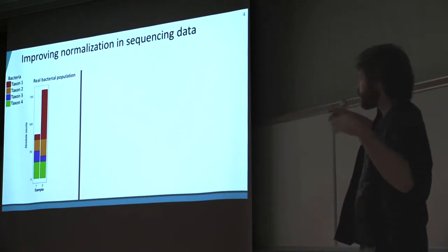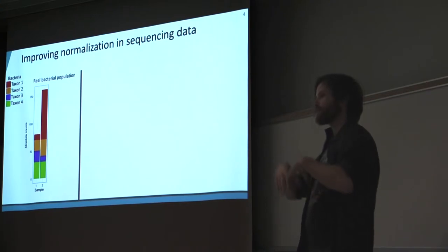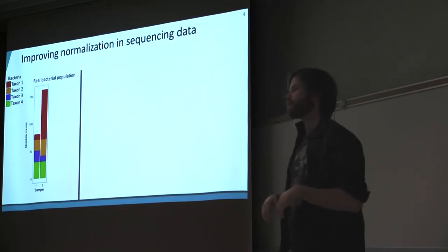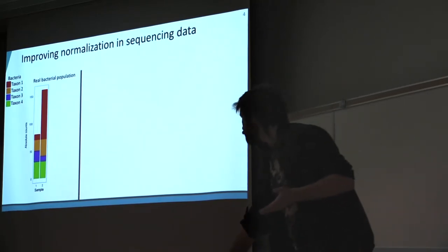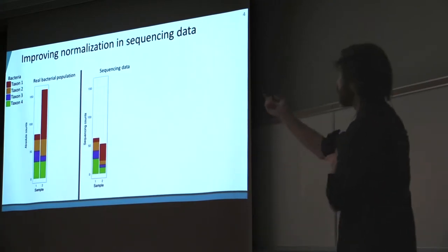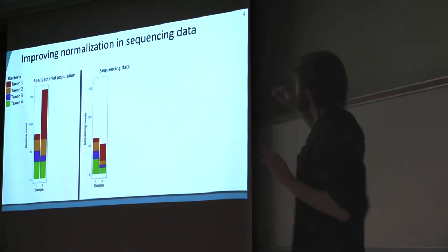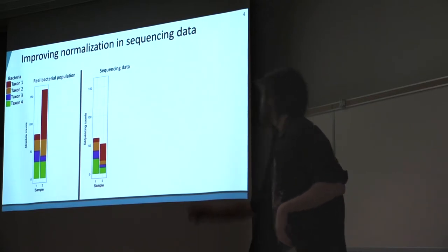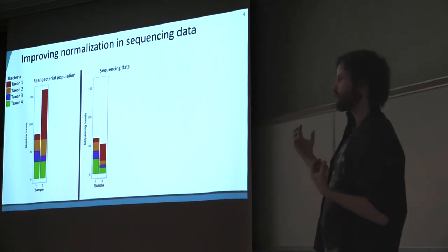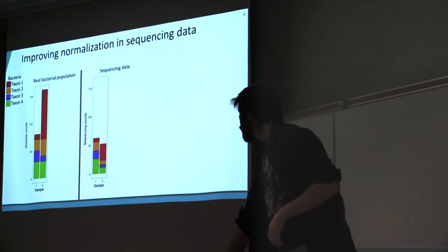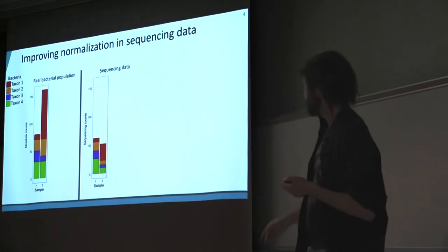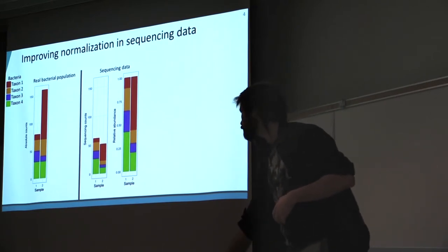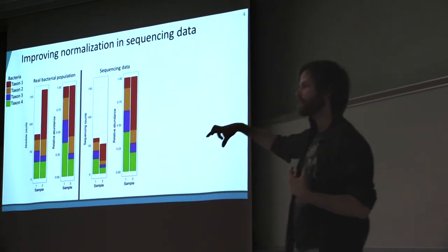Moving on to the data analysis side — once you already have these bacterial sequencing counts and relative abundance profiles, what do you do next? You have to do normalization. Here's a toy example of why. On the left is our true hypothetical bacterial population in two samples with four types of bacteria. On the right is our sequencing data set — a random sample of the original community. When you scale sequencing counts to relative abundances, that relative abundance profile looks very similar to the relative abundance profile in your original sample.